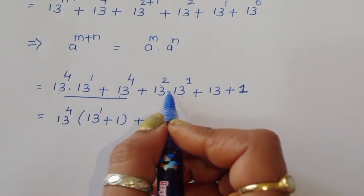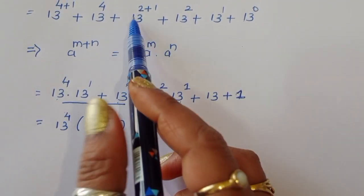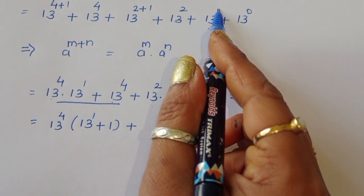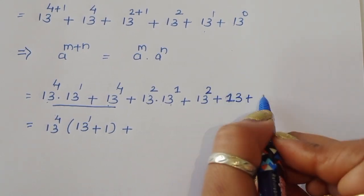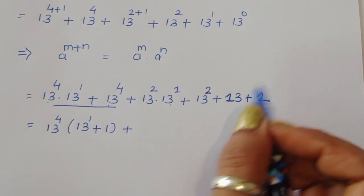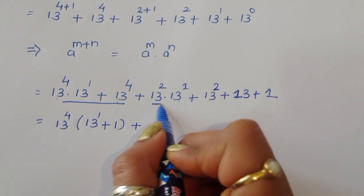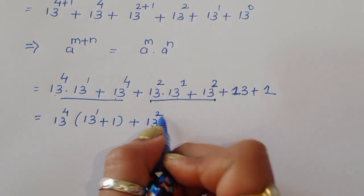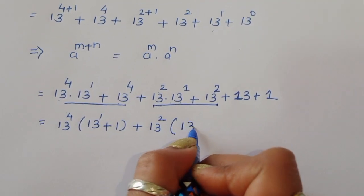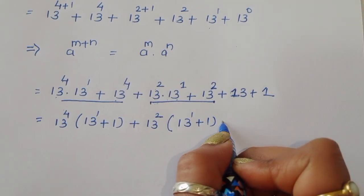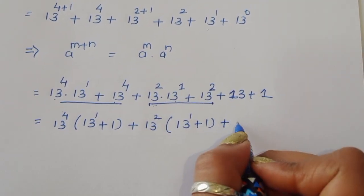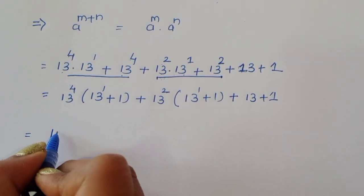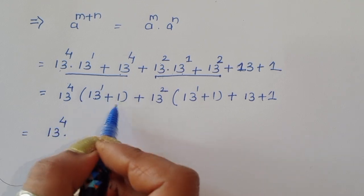When we take 13 as common, we get 13 times 13 power 2. Then we have 13 power 2 times 13 power 1 plus 13 power 2 plus 13 power 1, which is 13, plus 13 power 0, which is 1. So the inner bracket simplifies to 13 power 2 times 13 power 1 plus 1, plus 13 plus 1.